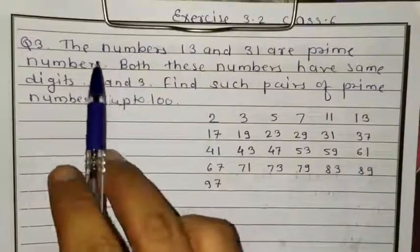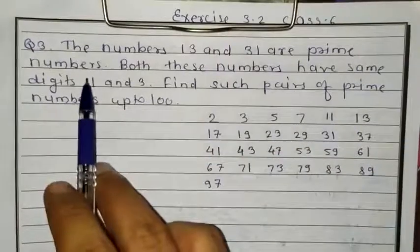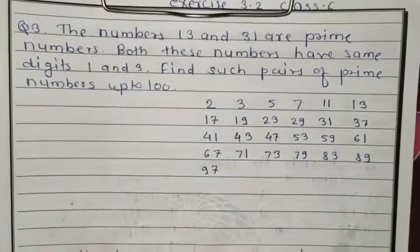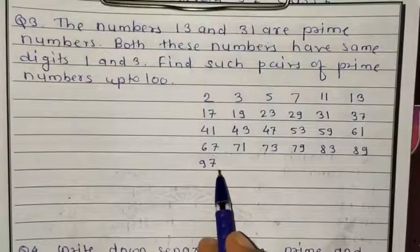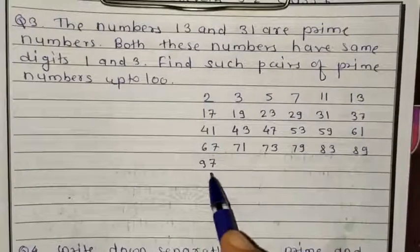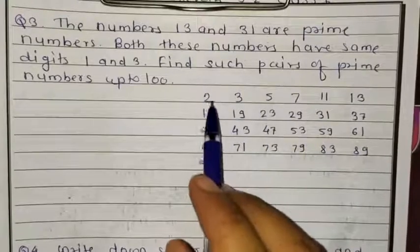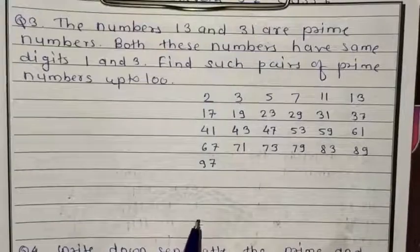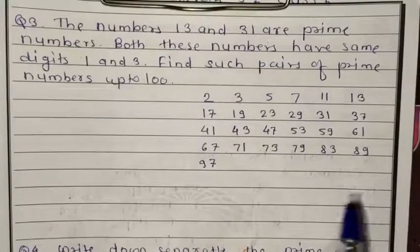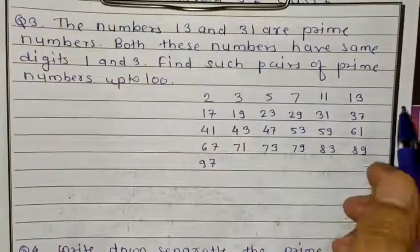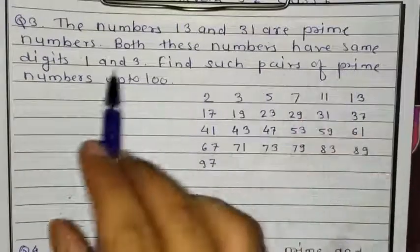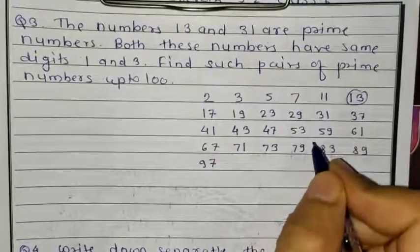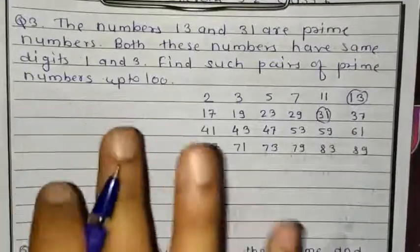Now we are in question number 3. The numbers 13 and 31 are prime numbers. Both have the same digits 1 and 3. Find such pairs of prime numbers up to 100. I have already written the prime numbers up to 100 in advance — there are 25 total prime numbers. Here we circle 13 and 31 as they are already given. We need to find other such pairs.